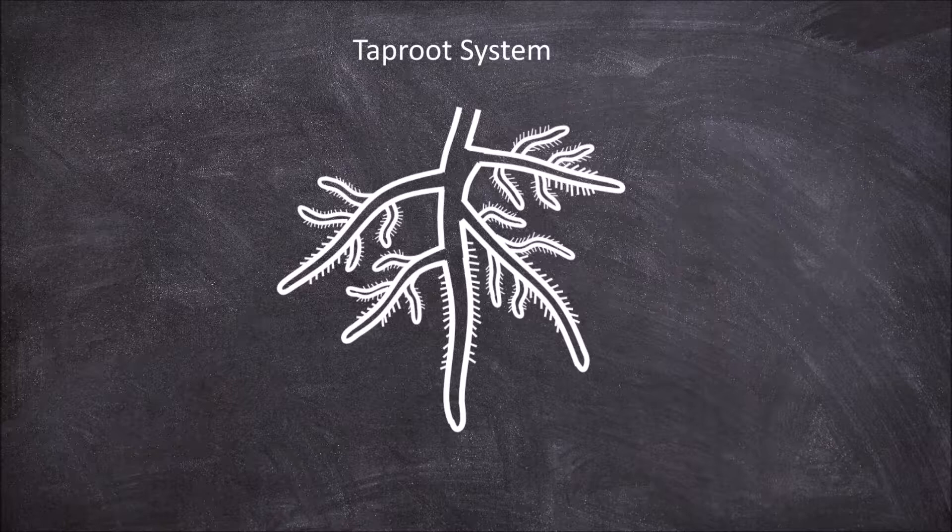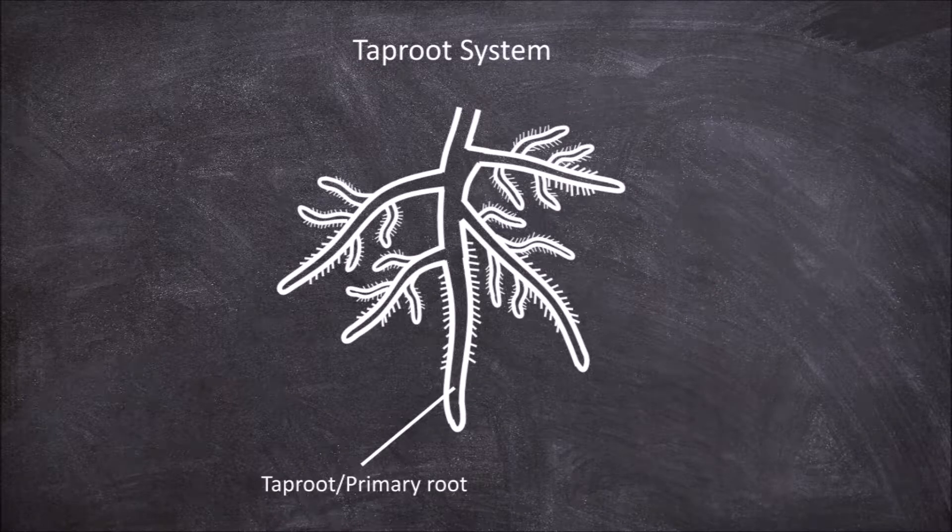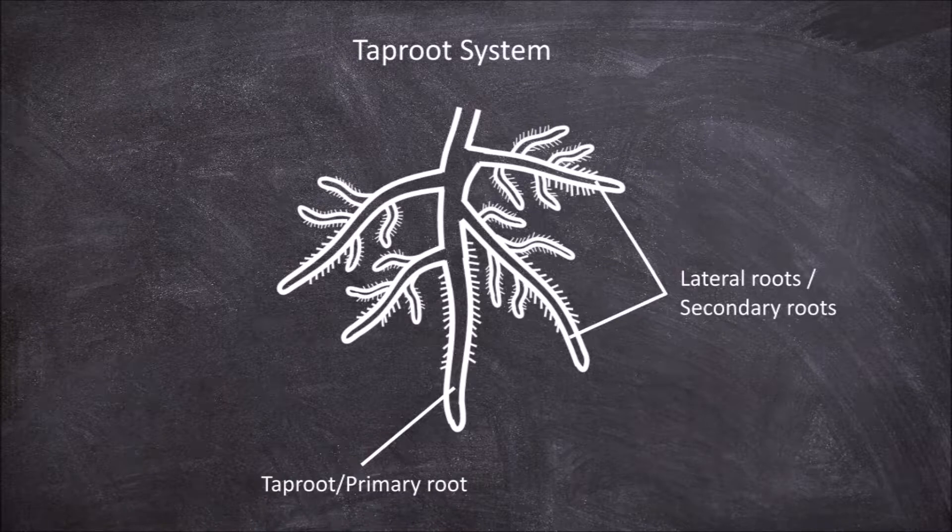This system consists of a central taproot, also known as the primary root. Lateral roots extend out from the central taproot, called secondary roots.